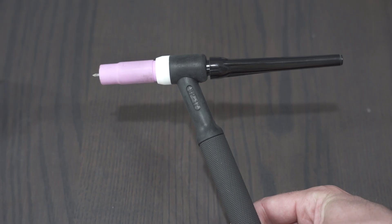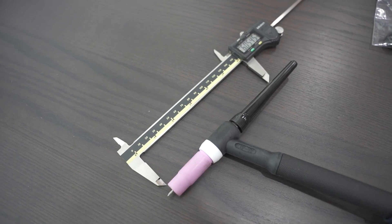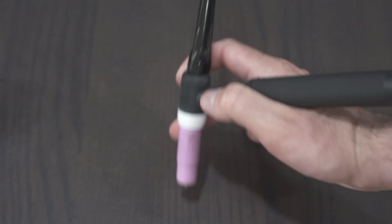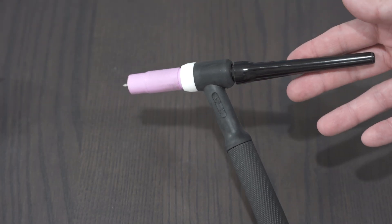With a standard TIG torch like this, you're looking at a little over 7 inches in total length. It's actually fairly large and when you're trying to hold it and get it around different objects it can be fairly large.